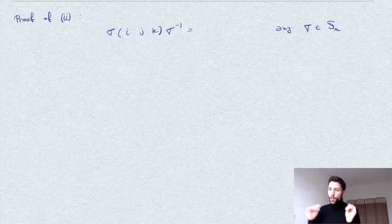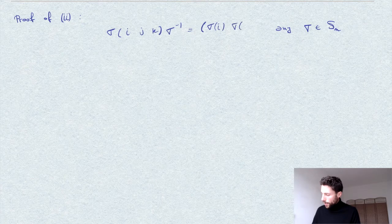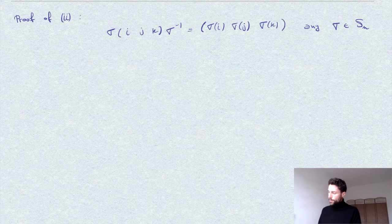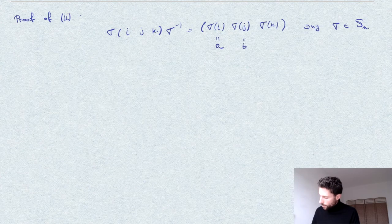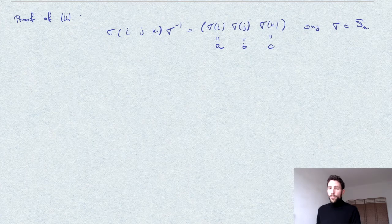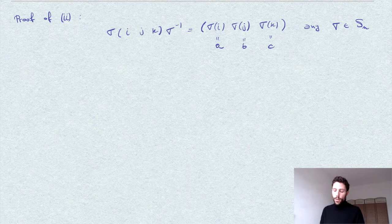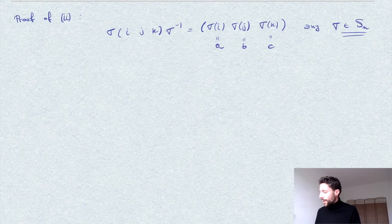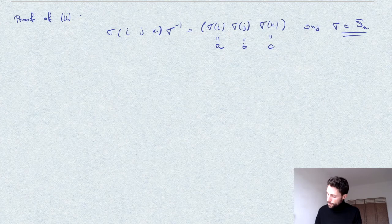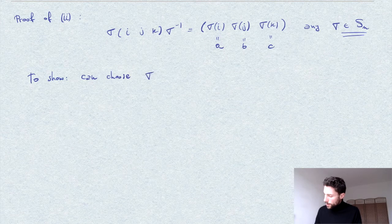The result is precisely the three-cycle (σ(i), σ(j), σ(k)). Calling these A, B, C, this trick works not only for three-cycles but for cycles of any length r — showing that r-cycles are always conjugate inside Sn. What we want to show is that for three-cycles, we can actually choose σ in the alternating group An.